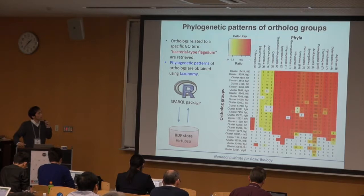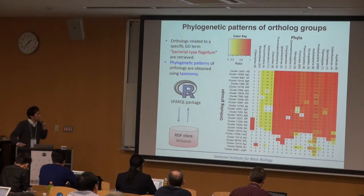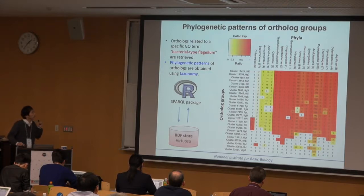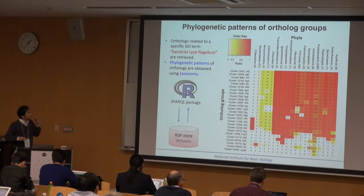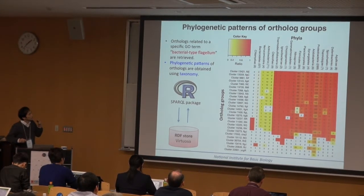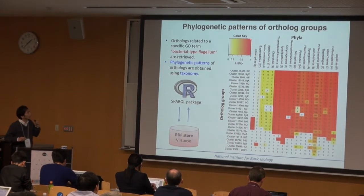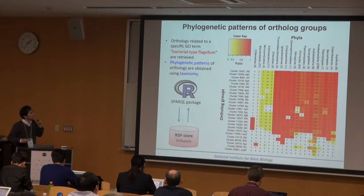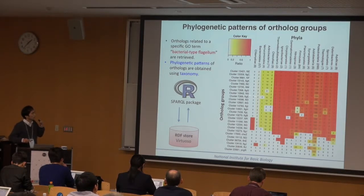I will show an example where the R environment is used with a SPARQL package. First, orthologs related to a specific GO term — in this case bacterial-type flagellum — are retrieved. The resulting ortholog groups are listed, and the organisms included in each ortholog group are obtained and summarized at the family level of the taxonomic tree.